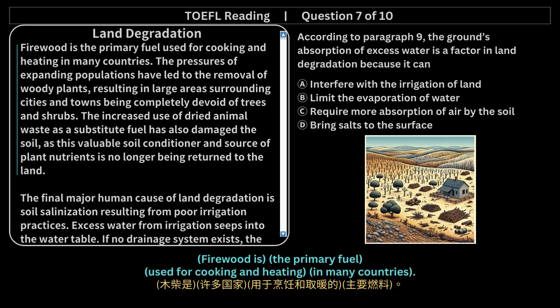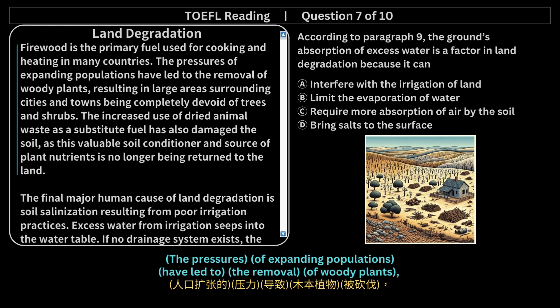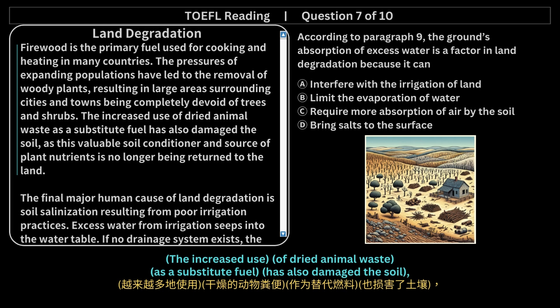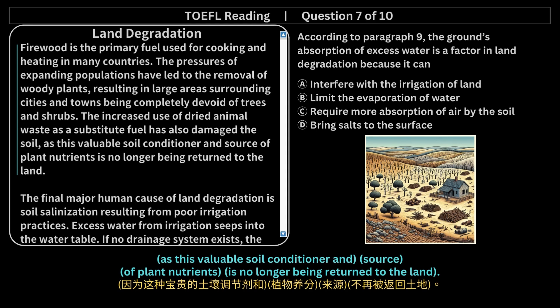Firewood is the primary fuel used for cooking and heating in many countries. The pressures of expanding populations have led to the removal of woody plants, resulting in large areas surrounding cities and towns being completely devoid of trees and shrubs. The increased use of dried animal waste as a substitute fuel has also damaged the soil, as this valuable soil conditioner and source of plant nutrients is no longer being returned to the land.